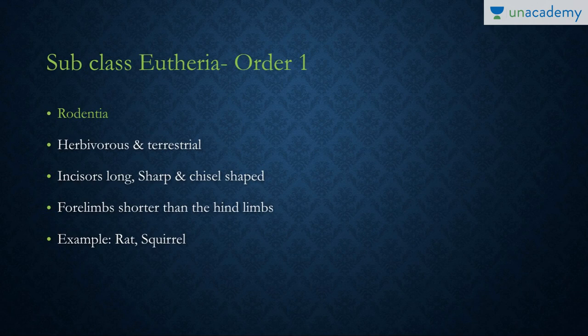Rodentia includes rats (Rattus) and squirrels. These are usually herbivores and terrestrial. They have long, sharp, chisel-shaped incisors for cutting. Their forelimbs are shorter than the hind limbs, as you can imagine by thinking about a rat.